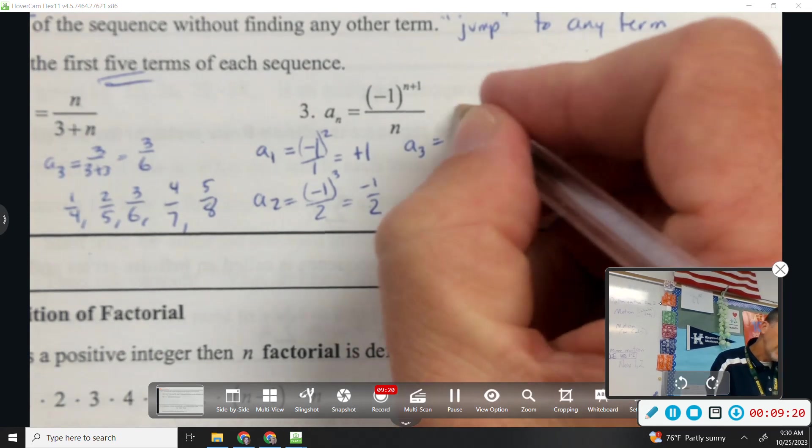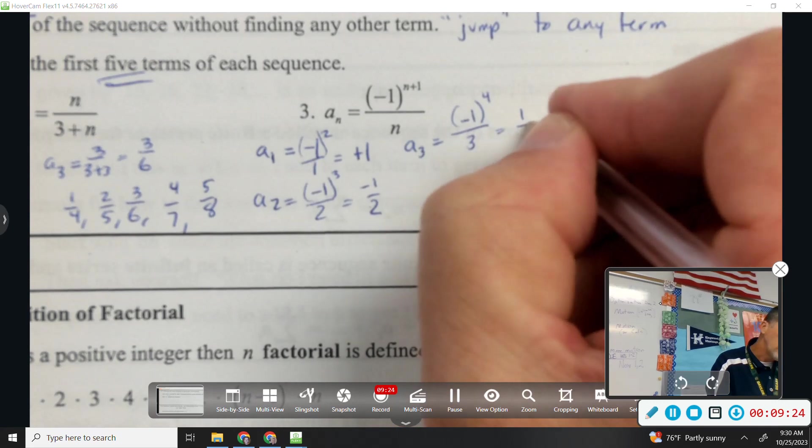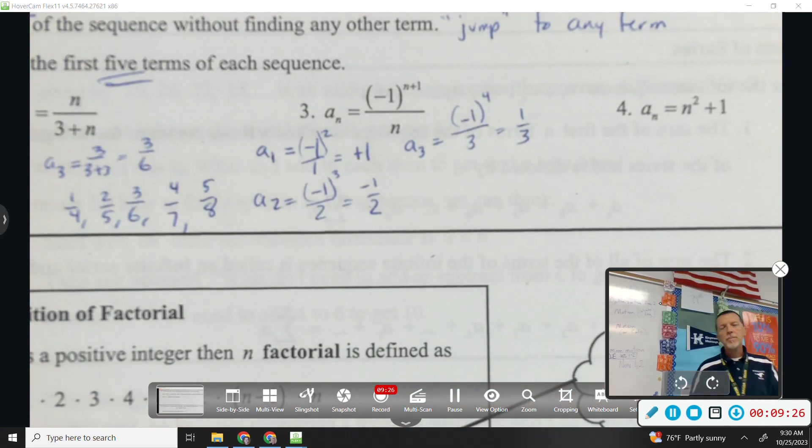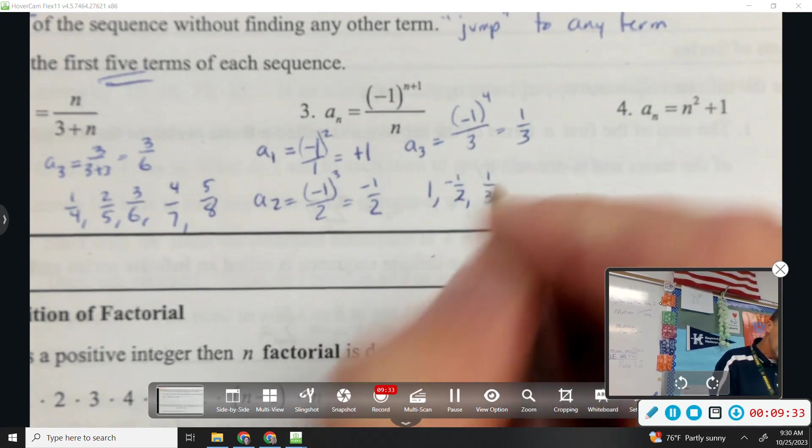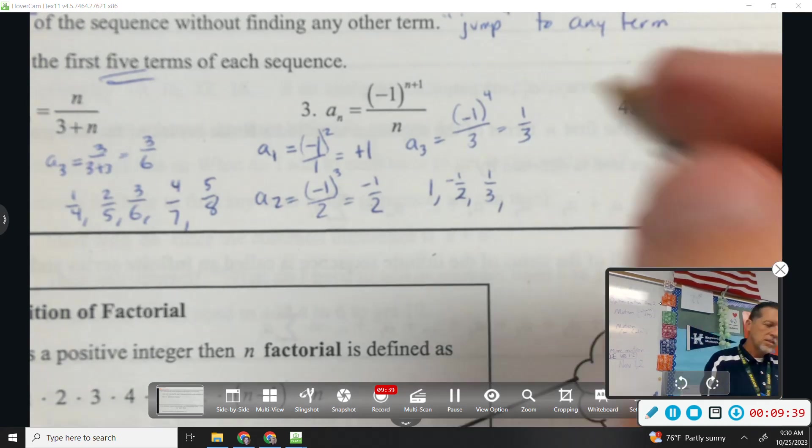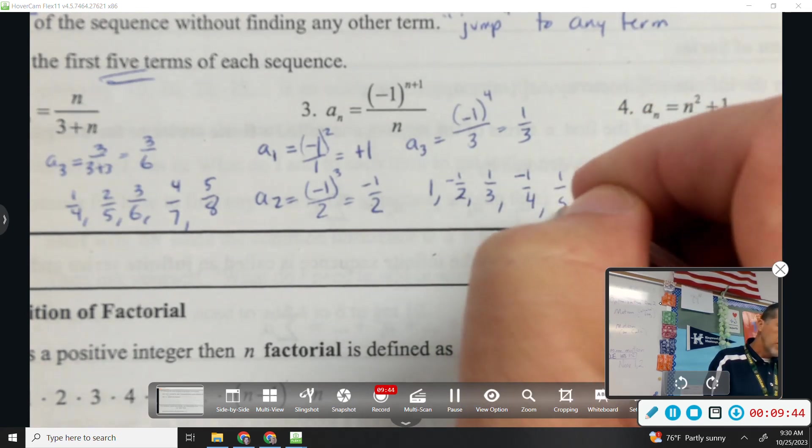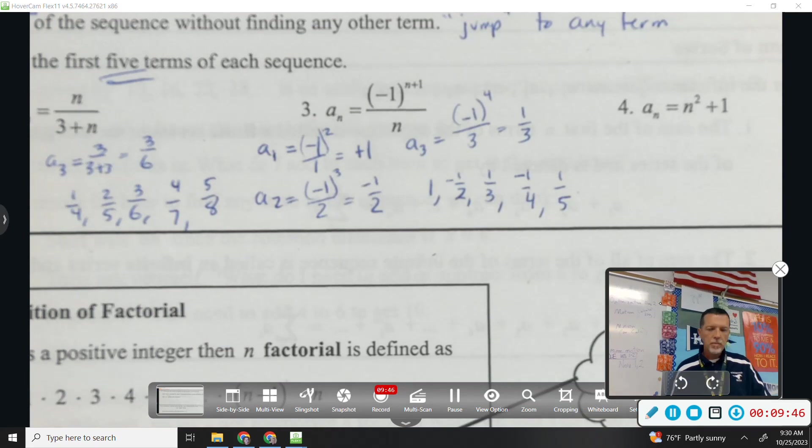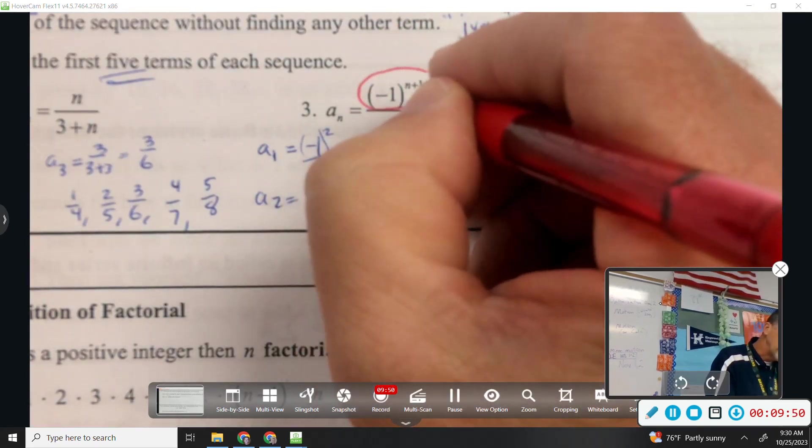A sub 3, so negative 1 to the 4th, all over 3. So that would be 1 third. We got the pattern yet? So 1, negative 1 half, comma 1 third. What's the next term going to be? Negative 1 fourth, positive 1 fifth.